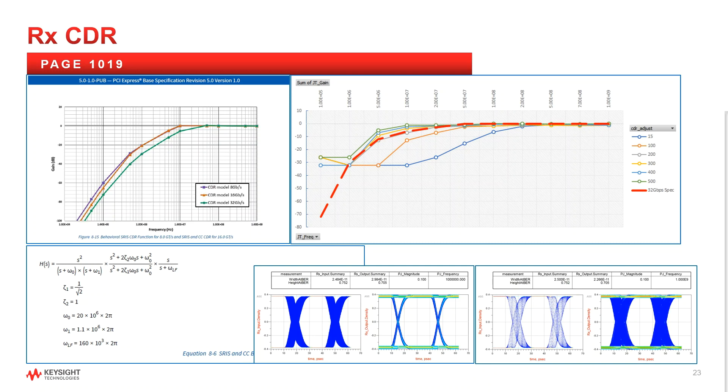Receiver clock data recovery. The graph on the left is the CDR function from the spec. A key characteristic for the 32 gigatransfer curve is the minus 3 dB point is at 10 megahertz. The plot on the right is the CDR behavior modeled in system view. The system view model has a parameter adjustment. What is shown is the sweeping of that CDR sensitivity parameter and its corresponding frequency behavior. For this setup, a CDR adjust value of 200 nicely meets the 32 gigatransfer spec, which was actually used in the final model.